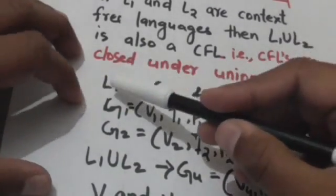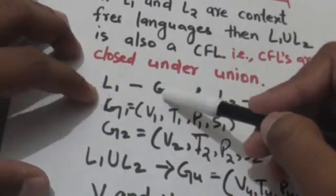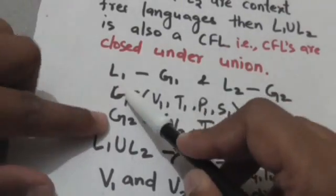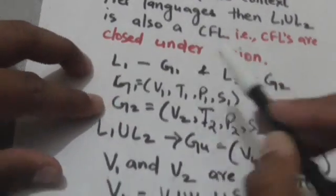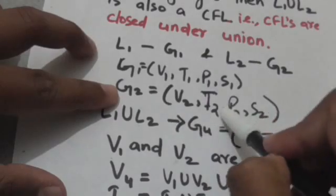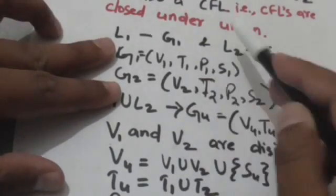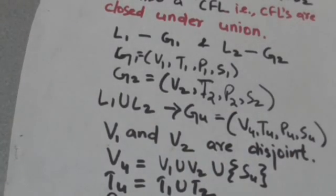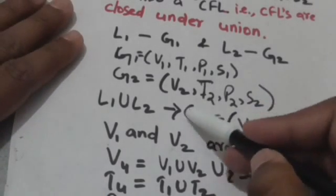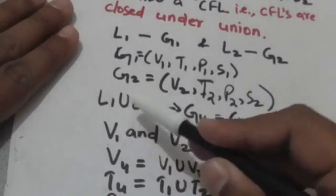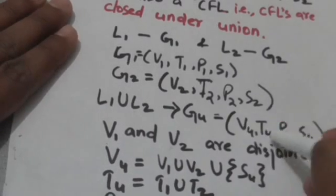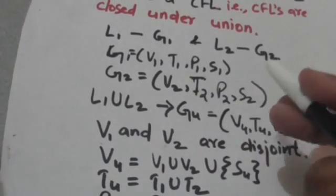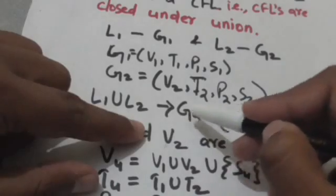Suppose there is a context-free language L1 whose grammar is G1, and another context-free language L2 whose grammar is G2. G1 is defined by the quadruple (V1, T1, P1, S1) and G2 is defined by the quadruple (V2, T2, P2, S2). Since L1 and L2 are context-free languages, their union L1 union L2 will also be a context-free language. Now we have to define its grammar. Let GU be the grammar of L1 union L2, defined by the quadruple (VU, TU, PU, SU).